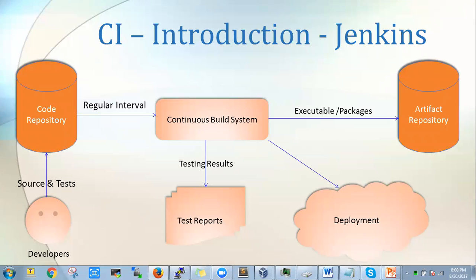Now let us focus on the whole architecture of CI — continuous integration. We have a code repository, which can be something like Git, where developers can place their code. Git is a version control tool with multiple branches where developers are working. Once the code is working properly it can be saved into the master branch, and from the master branch we can pull that code into our continuous build system. The continuous build system has multiple plugins to build projects.